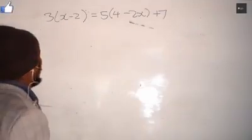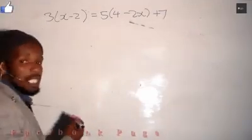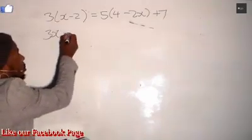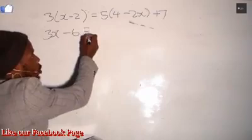We open the bracket by multiplying by the same number which is next to it, which is 3. So 3 times x becomes 3x. 3 times negative 2 is negative 6.